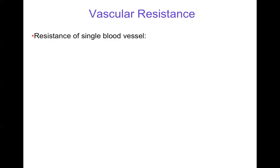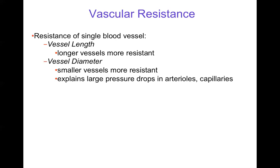To estimate vascular resistance of individual blood vessels: for a single vessel, length is important—longer vessels have more resistance. Diameter is important—smaller vessels have more resistance. The importance of diameter explains the large pressure drop in arterioles and capillaries because they're small vessels with small diameters, so they have high resistance.